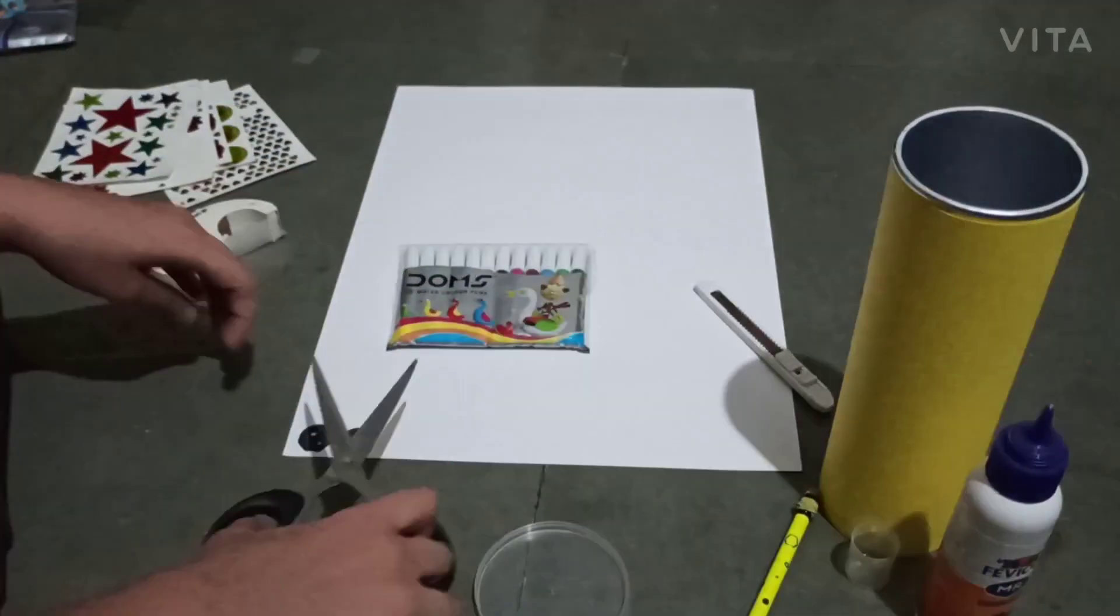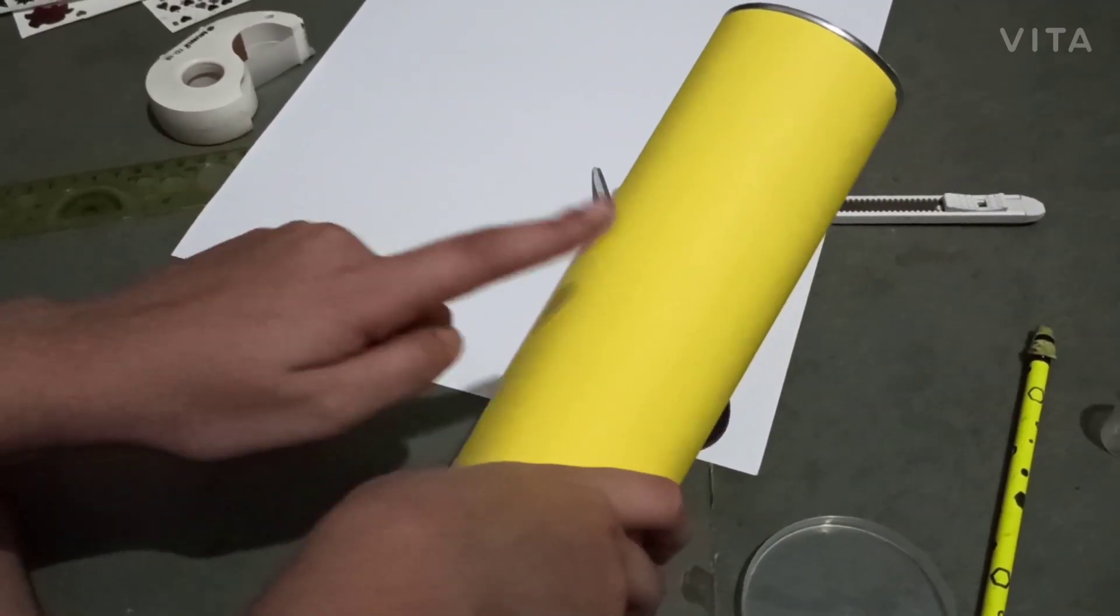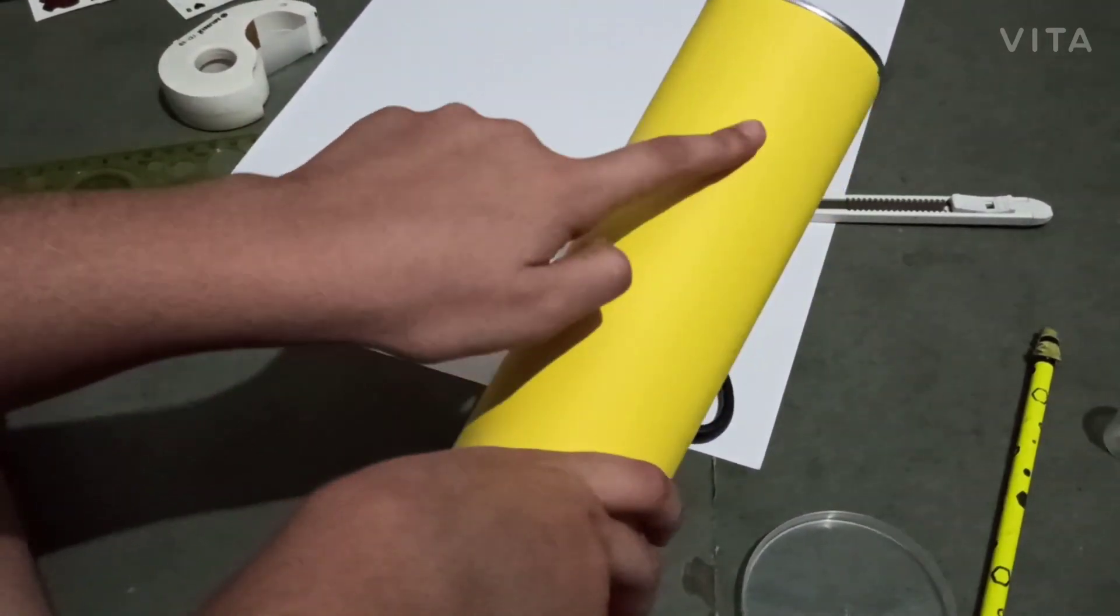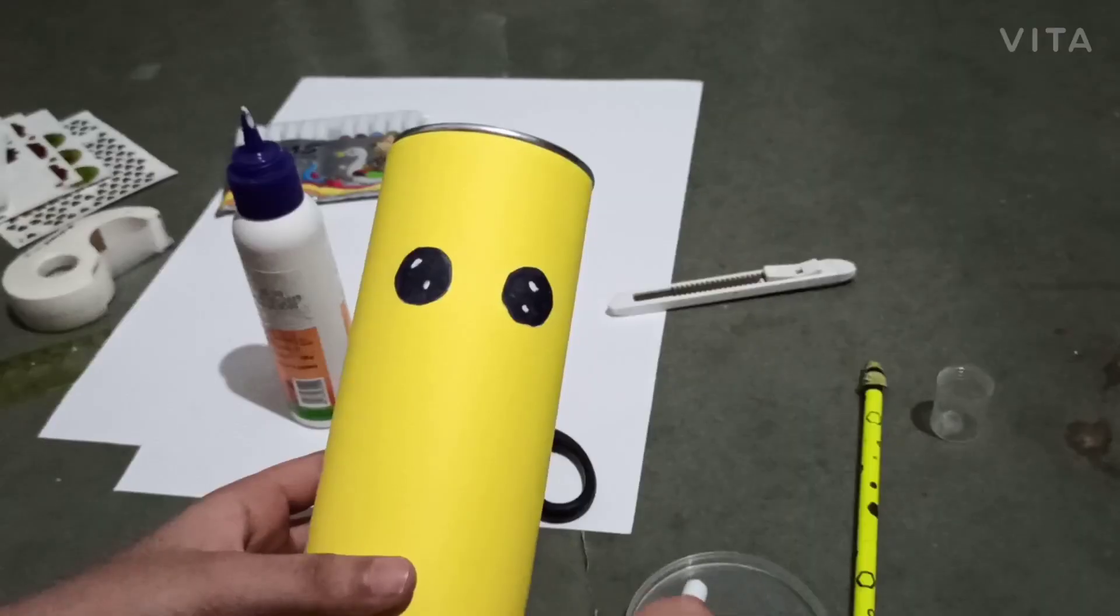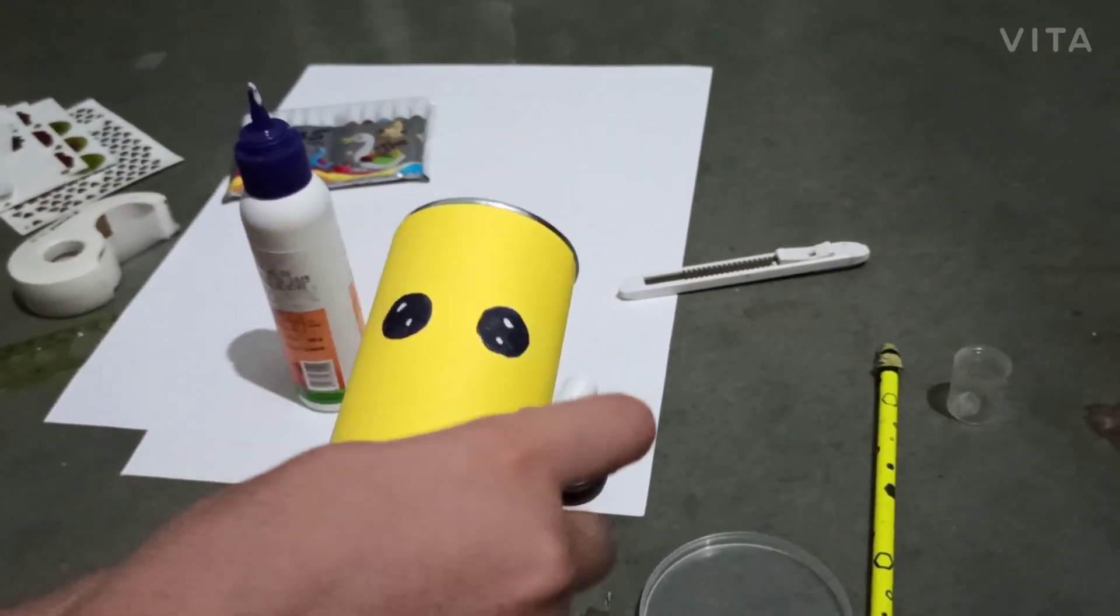Now we have to stick these eyes on this container. Now we have stuck these two eyes. Now we are going to draw a smiley.